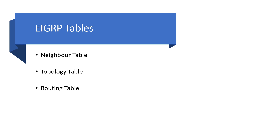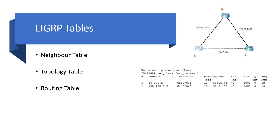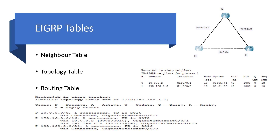The routing table stores only the best route to reach a remote network. In a network of three routers all running EIGRP with neighbor relationships established, we can display the neighbor table on R1 using 'show ip eigrp neighbors' — R1 has established two neighbor relationships showing neighbor IP addresses, local interfaces, and hold-down timers. Using 'show ip eigrp topology', notice there are two possible routes to the 172.16.0.0/16 network — one via 10.0.0.2 and another via 192.168.0.2.